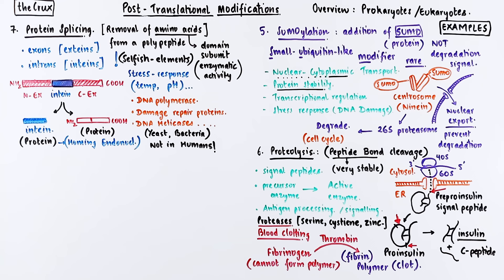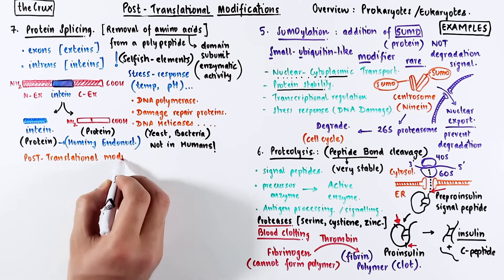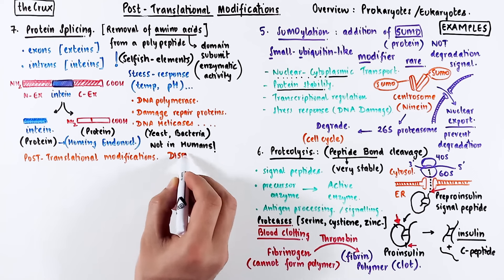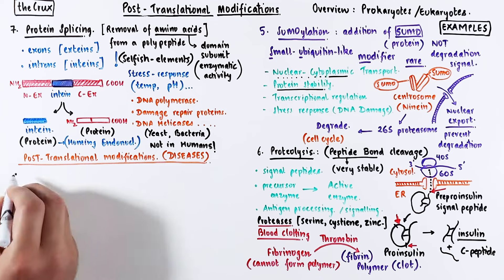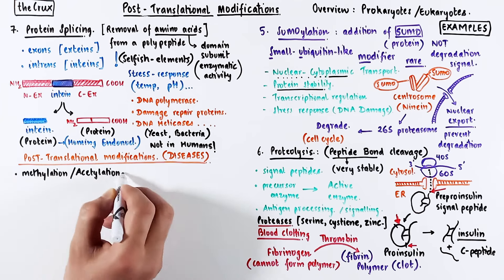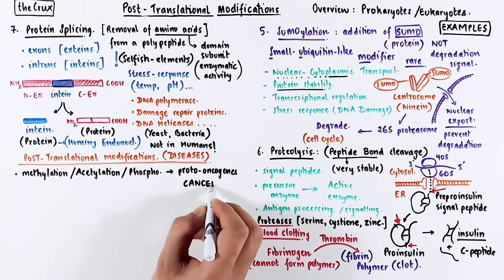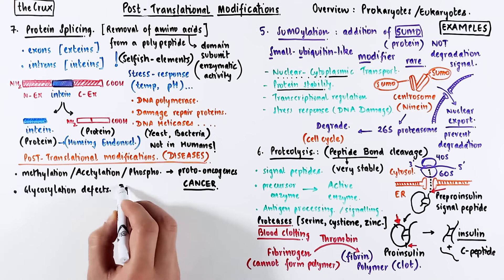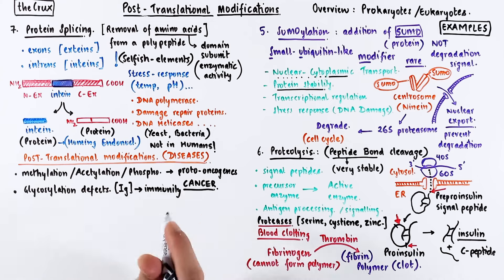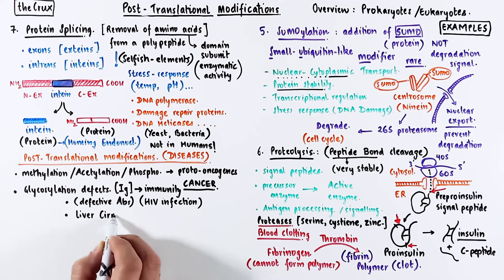Now that you understand some post-translational modifications and their functions, it shouldn't be a surprise that defects in these modifications can result in various diseases. The most obvious are defects in methylation, acetylation, and phosphorylation of a transcription factor or proto-oncogene that can easily result in cancer. Glycosylation defects in immunoglobulins can impact immunity. For instance, defects in sugar transfer to antibodies can increase the chances of HIV invasion. Liver cirrhosis is another example where defects in glycosylation are observed.